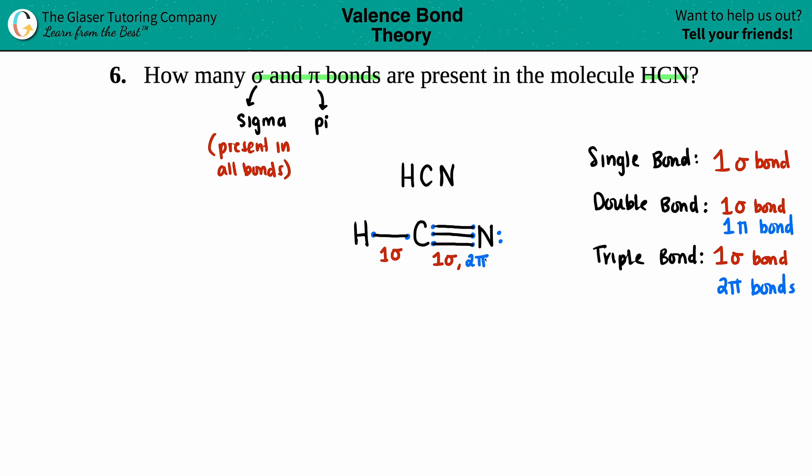So now we just want the total. The total number of sigma bonds is - I had one over here and one in the triple bond - so I have two. And then the total number of pi bonds was only in the triple bond - that was two - so I have two.